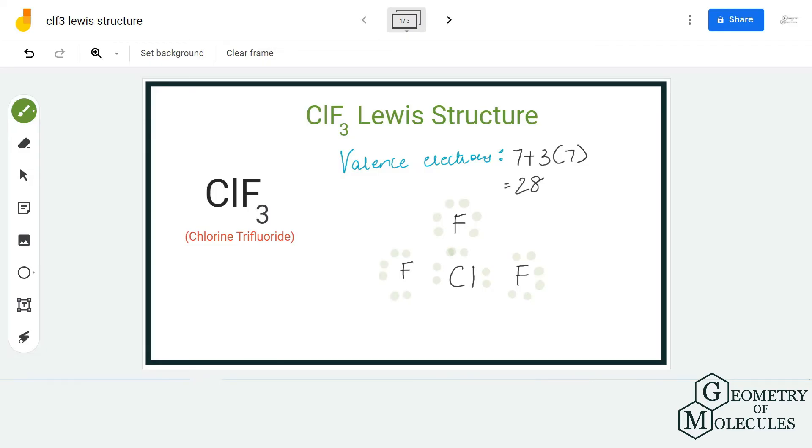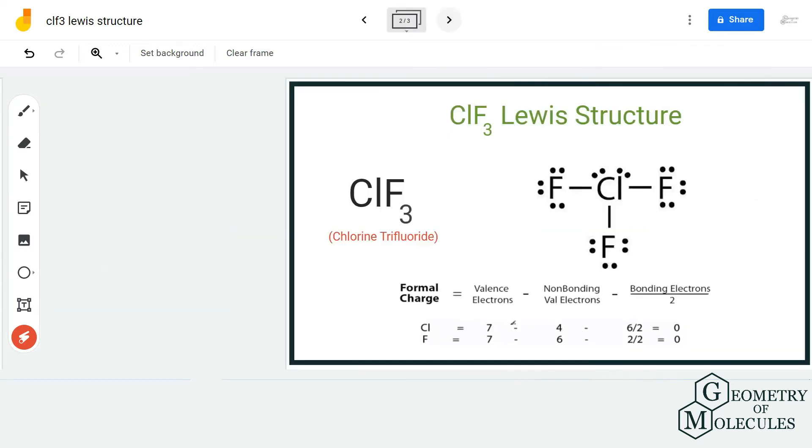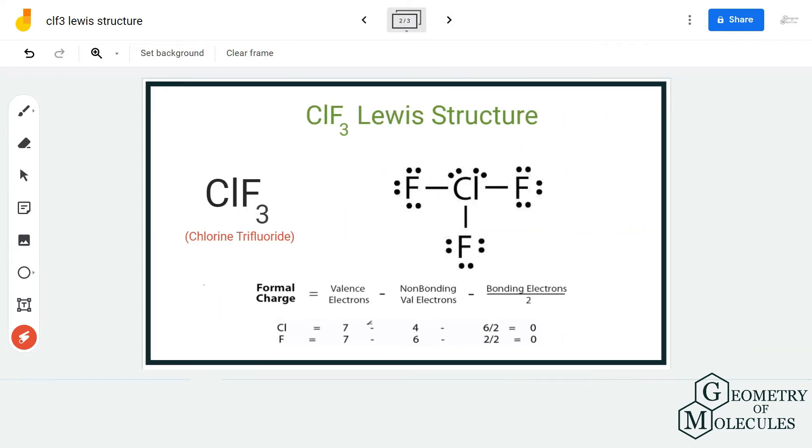There are seven valence electrons for chlorine, out of which four are non-bonding and six are bonding, and it has a formal charge of zero.